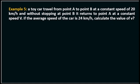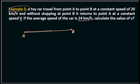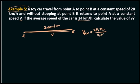Example four: A toy car travels from point A to point B at a constant speed of 20 km per hour, then returns from point B to point A at a constant speed V. If the average speed of the car is 24 km per hour, calculate the value of V.